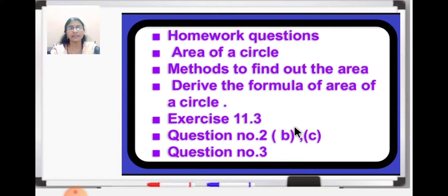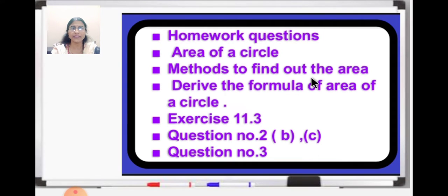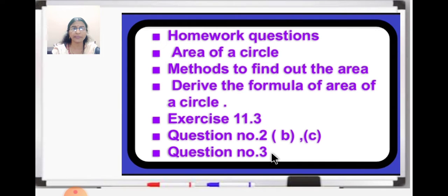First I am going to discuss homework questions — the questions which were given as homework, I will show you how to do it. You must have done it; you can check your homework. And then we will learn area of a circle, methods to find out the area of a circle, and derive the formula for area of a circle. Then we will do exercise 11.3, question number 2, B and C. A will be your homework, which is very easy. And then we will do question number 3.